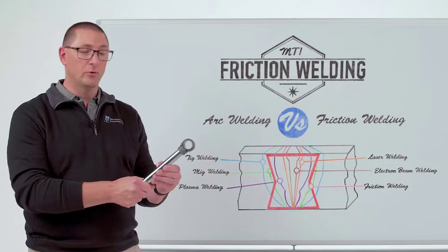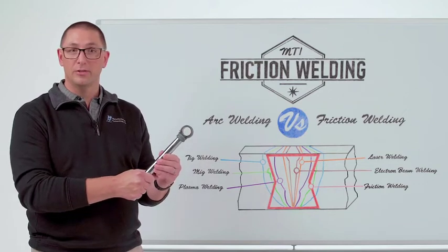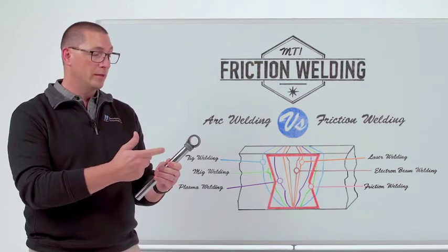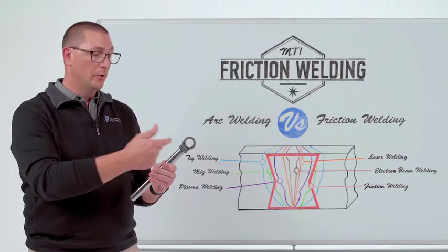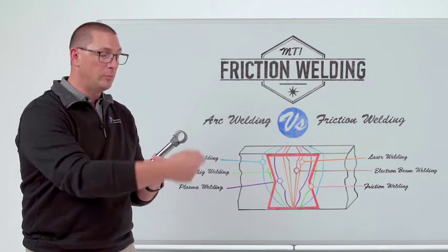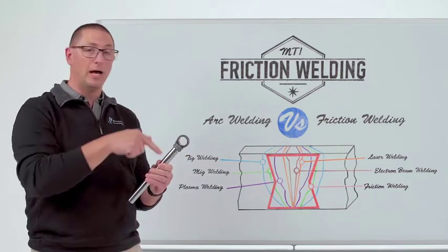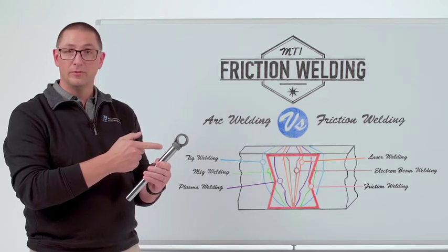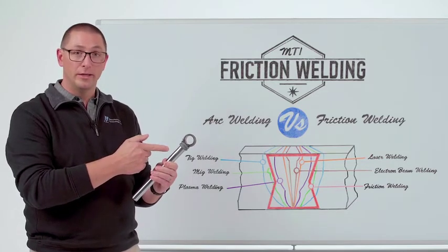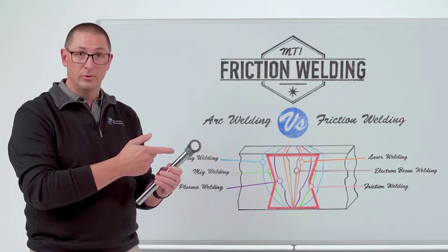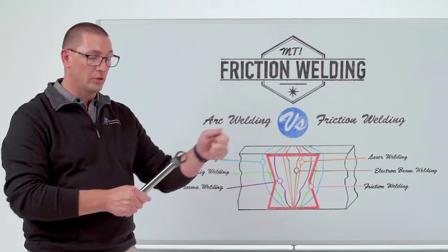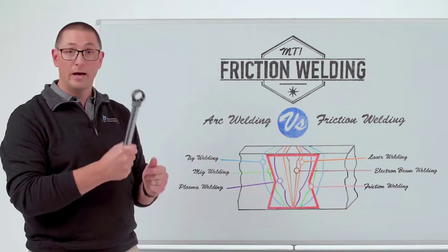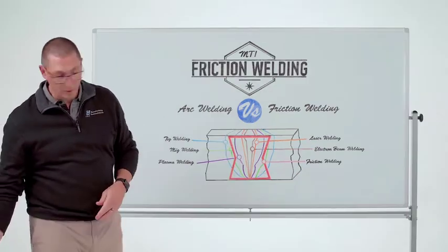A good historical example is a hydraulic cylinder rod. These are usually done with submerged arc welding, where you're making multiple passes around welding the eye to the bar. Whereas we can do it much faster with much higher quality because it's a solid state joint in friction welding. As a result, we get very good tension strength out of the friction welded component.